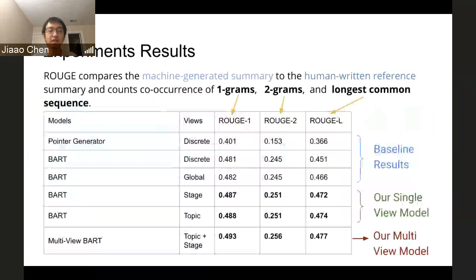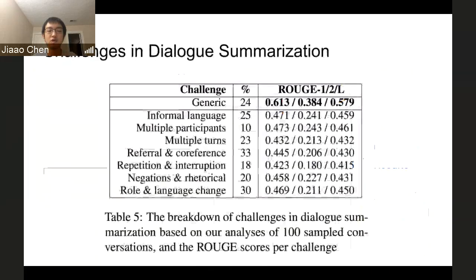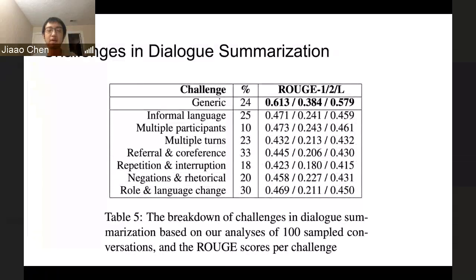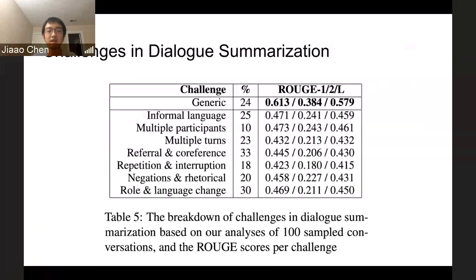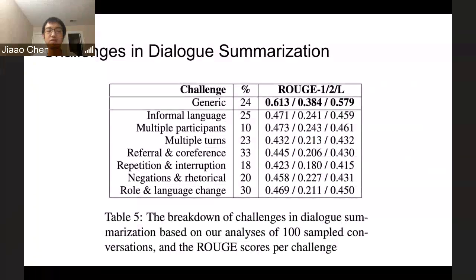Through experiments, we prove that our multi-view models outperform all the baseline models in terms of ROUGE scores. Also, we analyze the current challenges in dialogue summarization through 100-some-fold conversations, and we conclude seven aspects: informal language, multiple participants, multiple turns, co-references, interruptions, negations, and role and language changes.